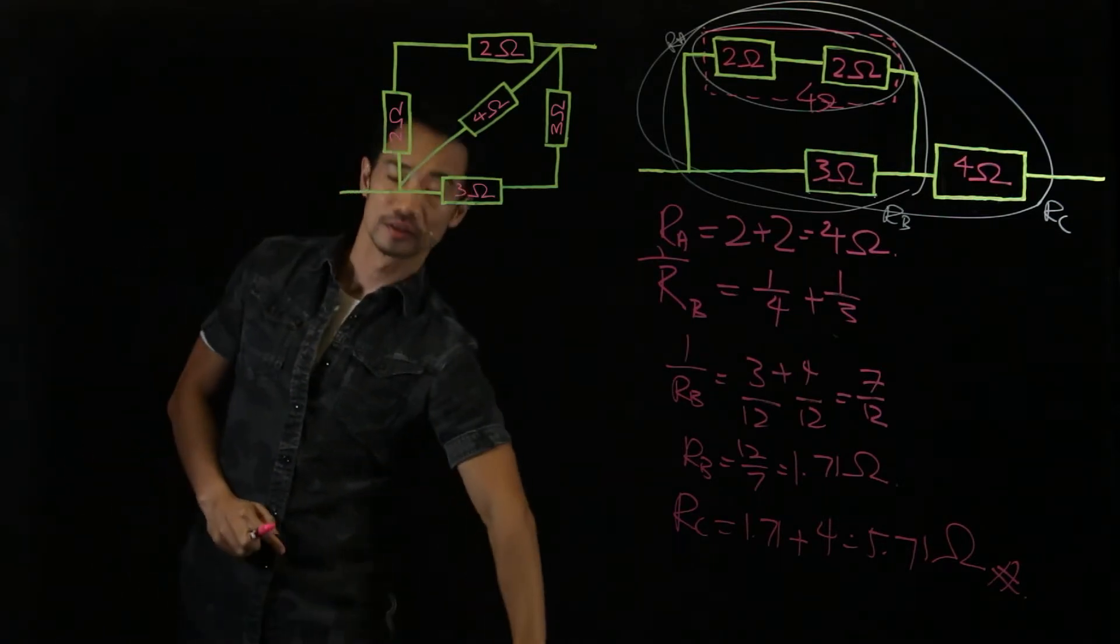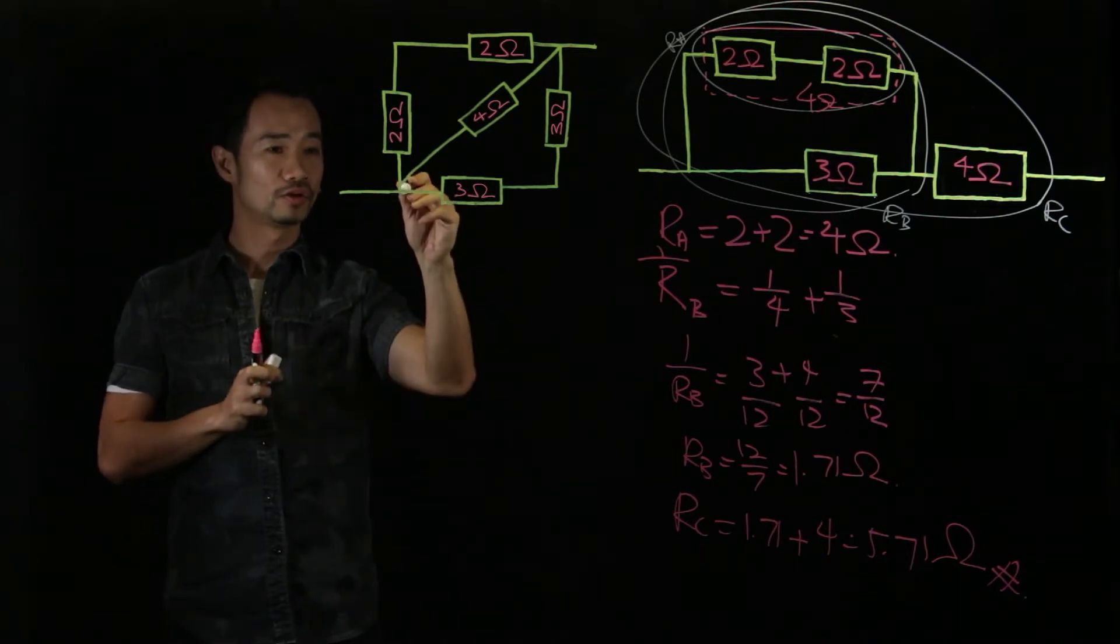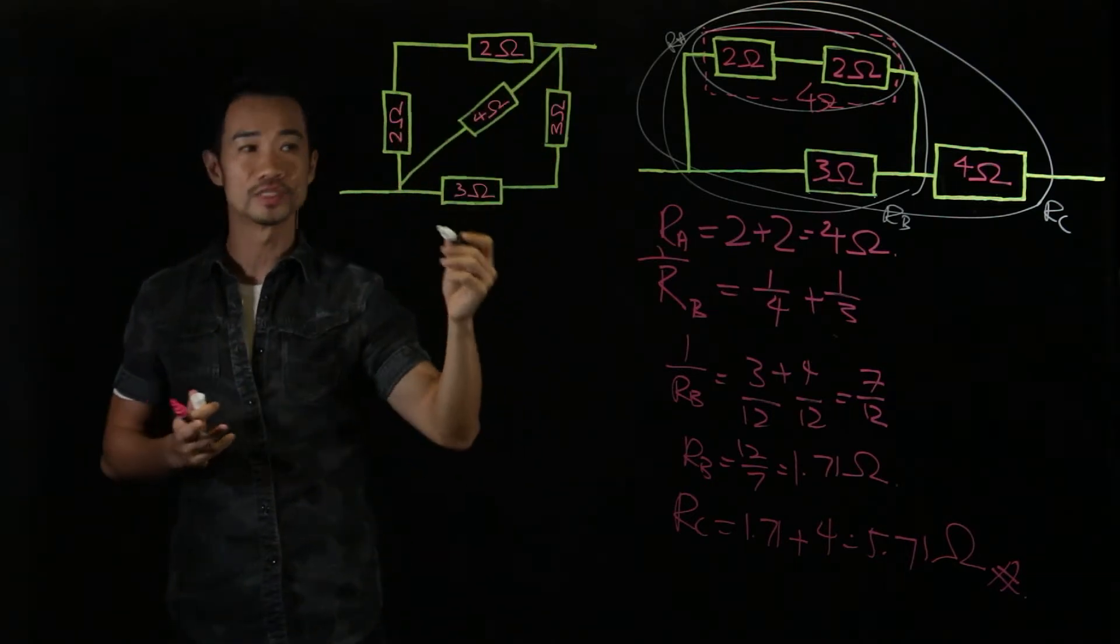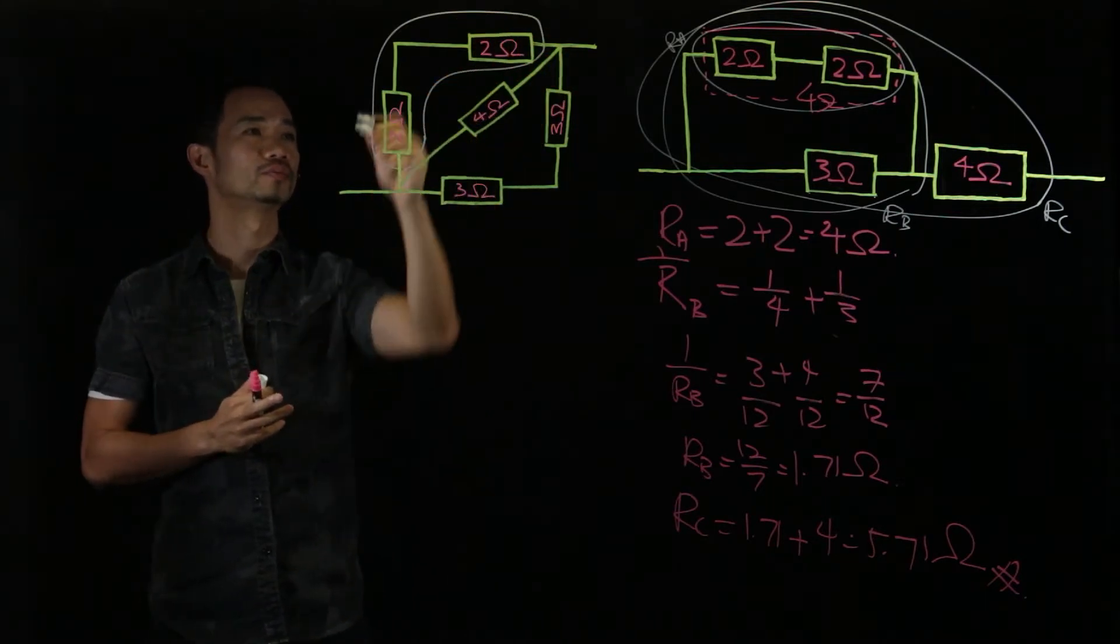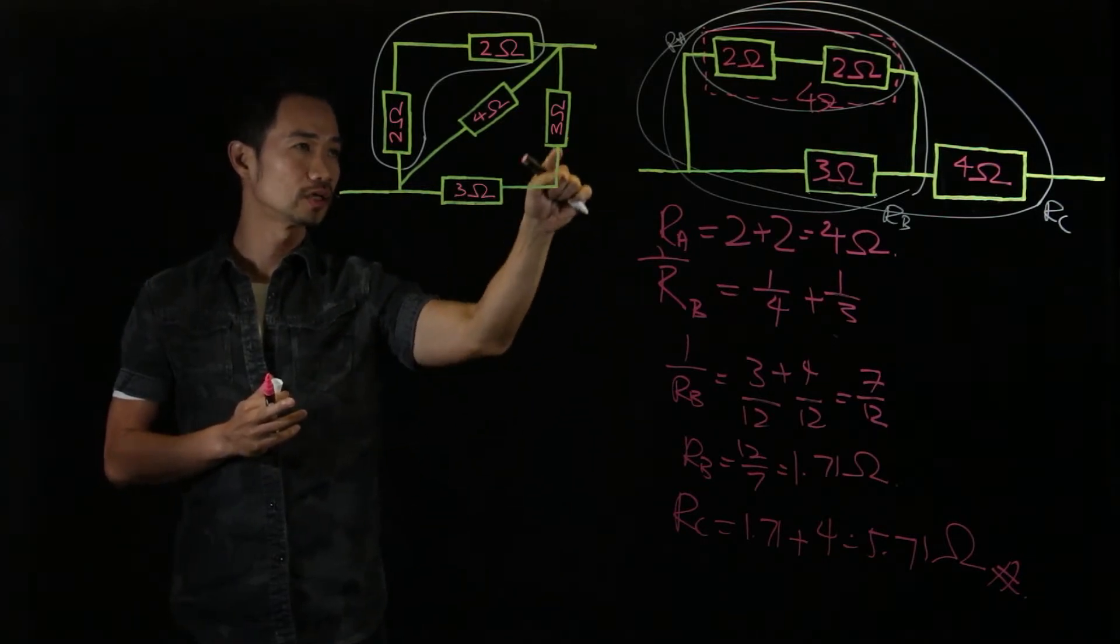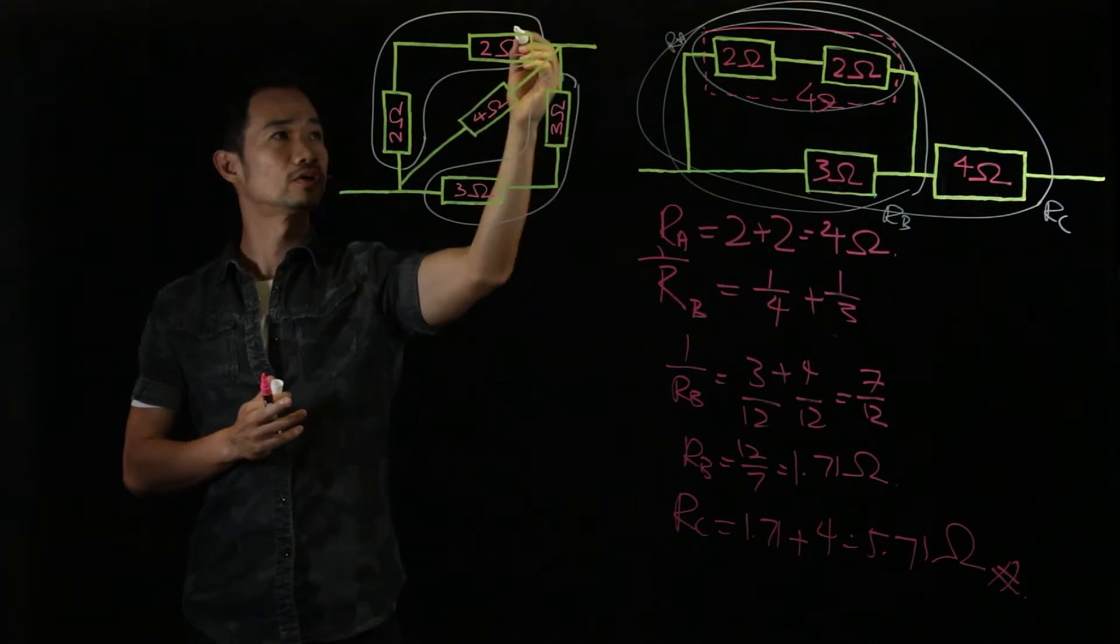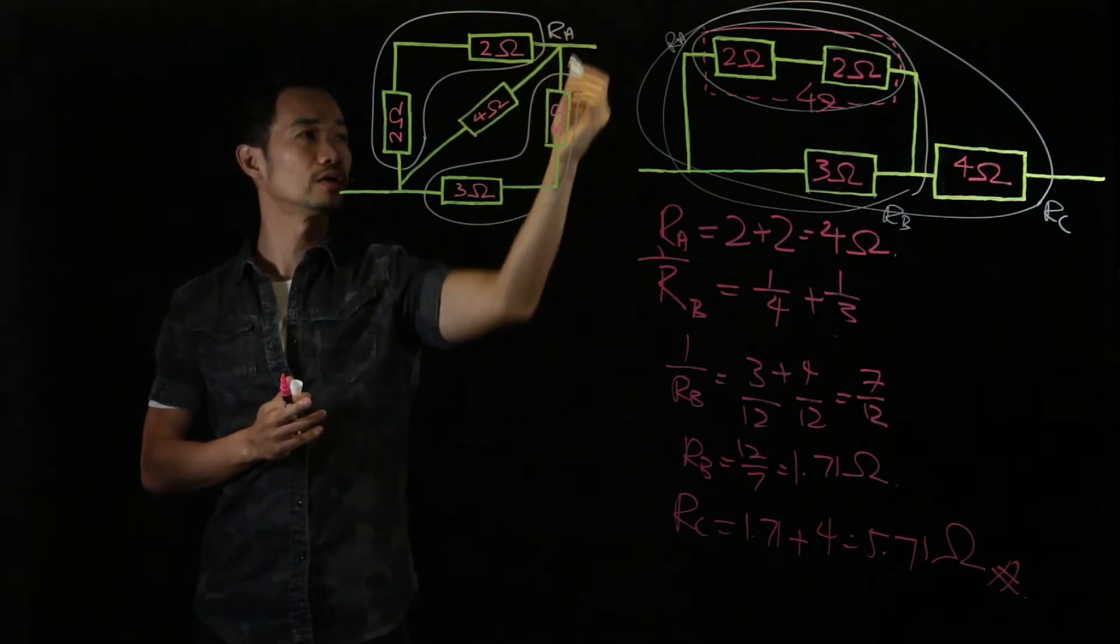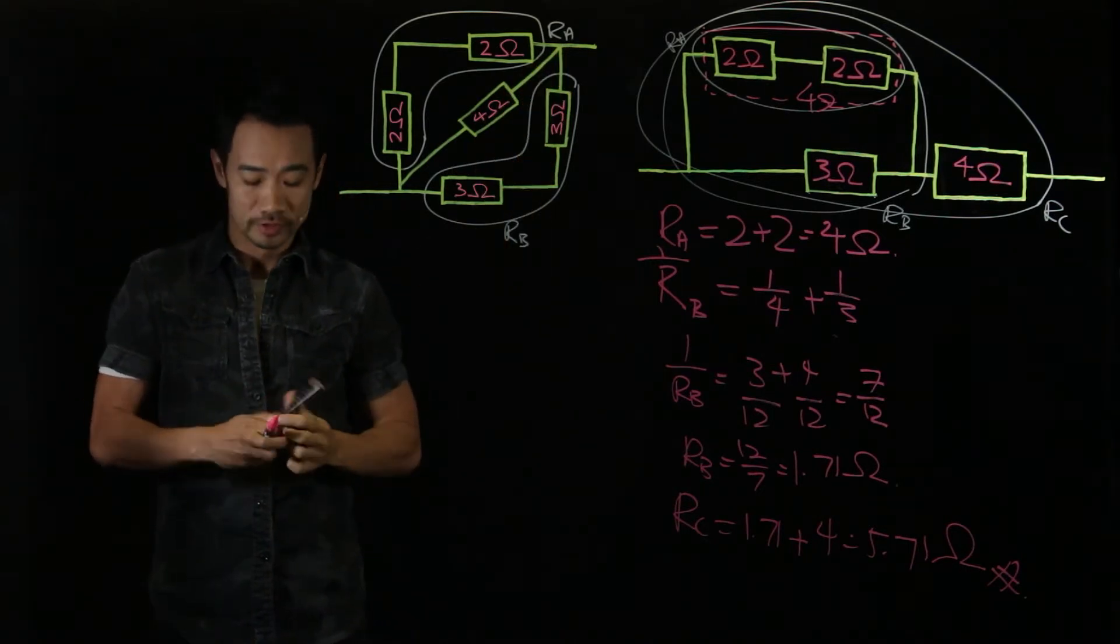First of all, you see these two 2-ohm resistors, they are actually along the same path. So same path means what? They are in series. Look like a boomerang. Then you see these two 3 ohms, they are also along the same path. So they are also in series. So let's call this Ra and let's call this Rb. We can definitely settle these two composite resistors first.